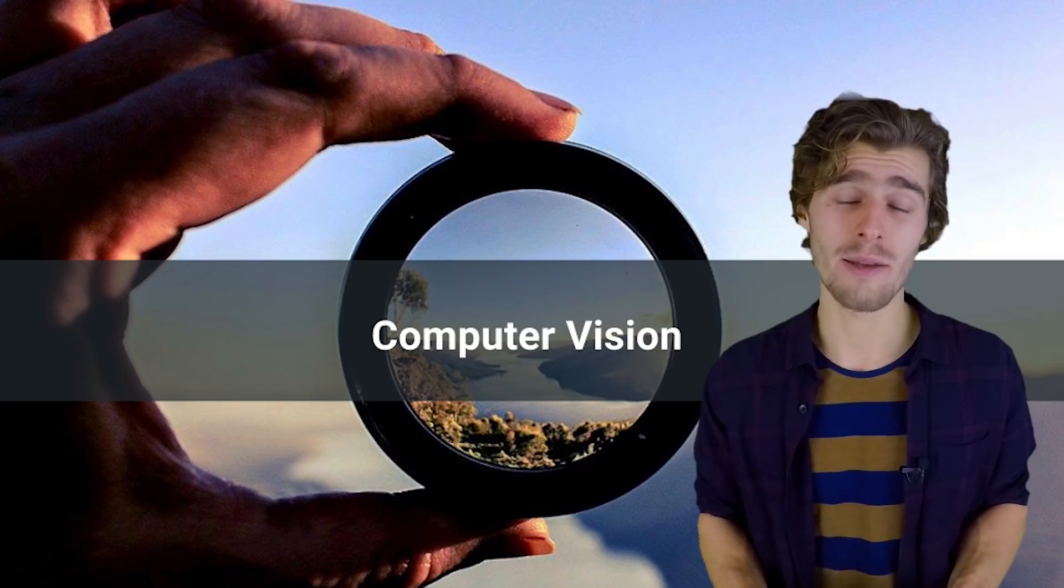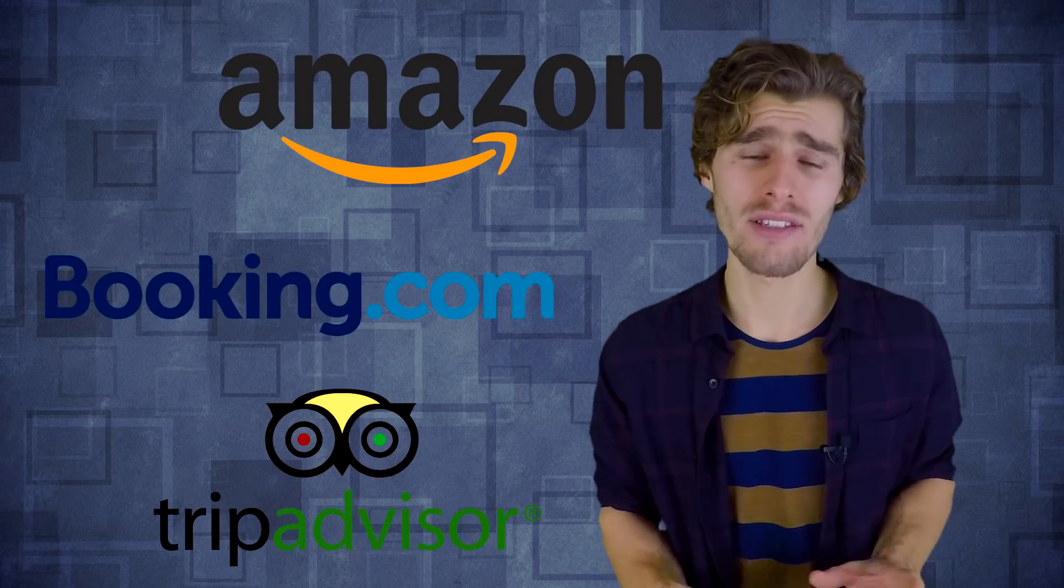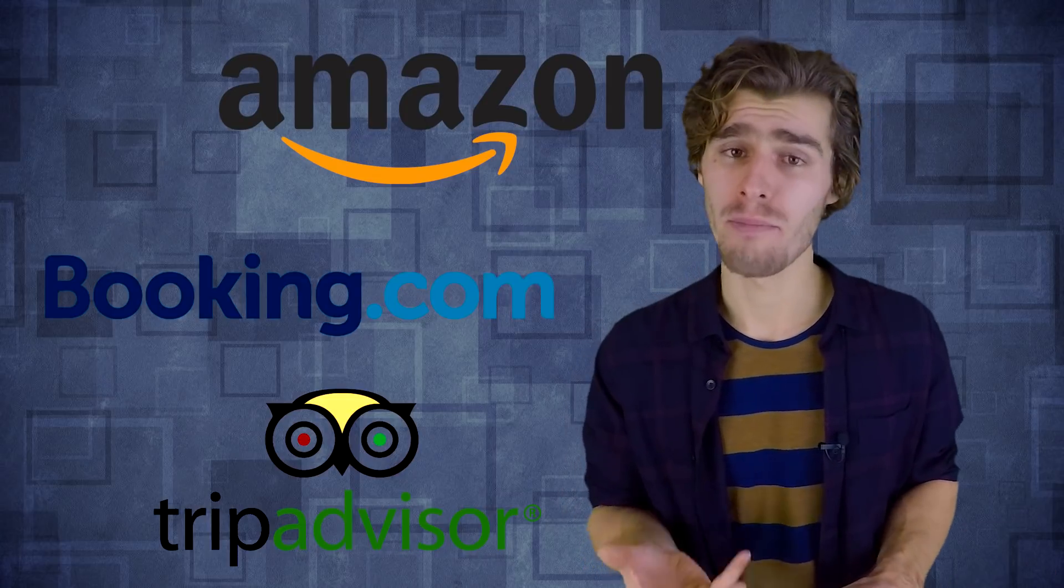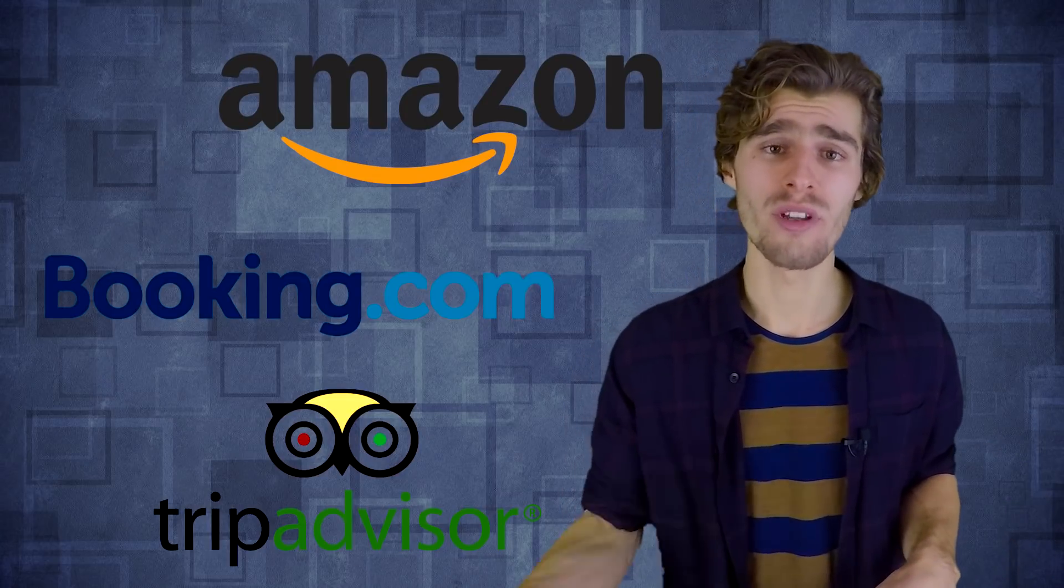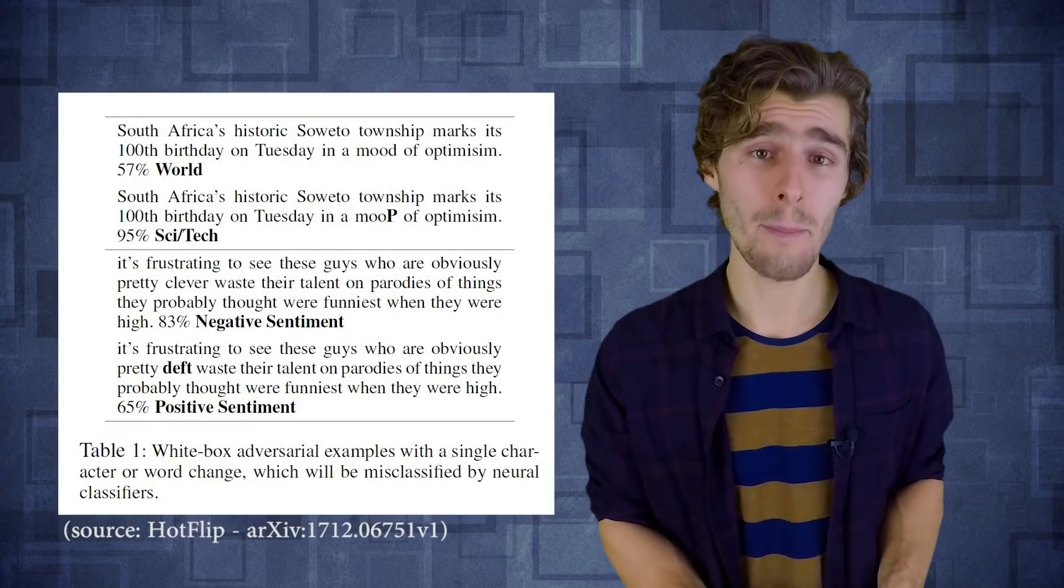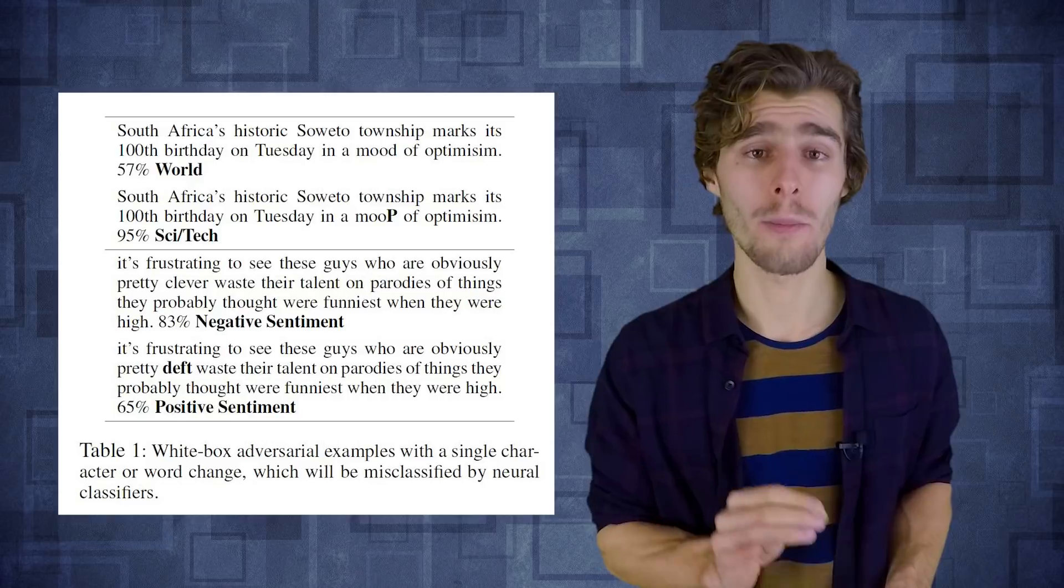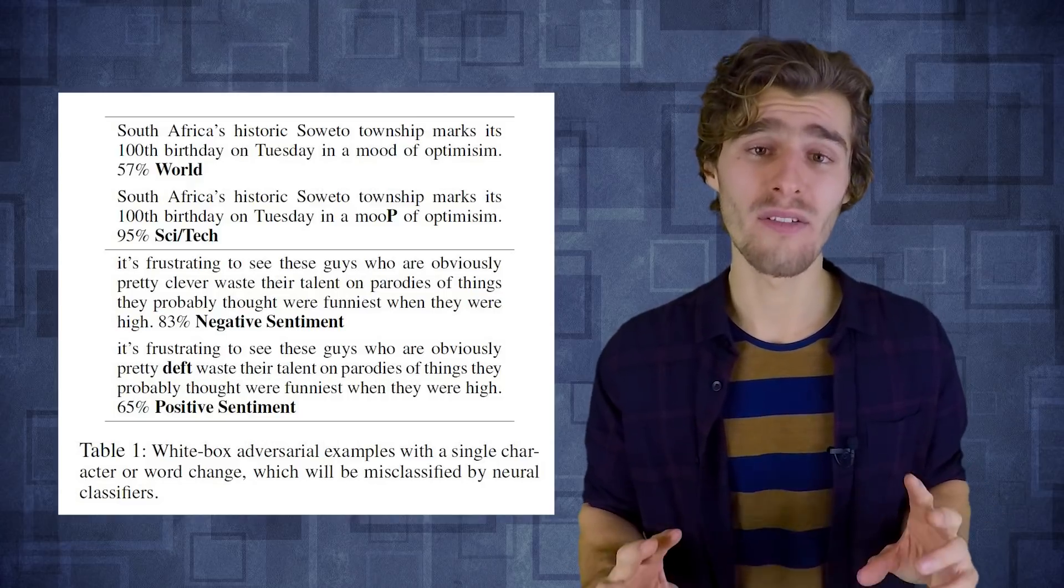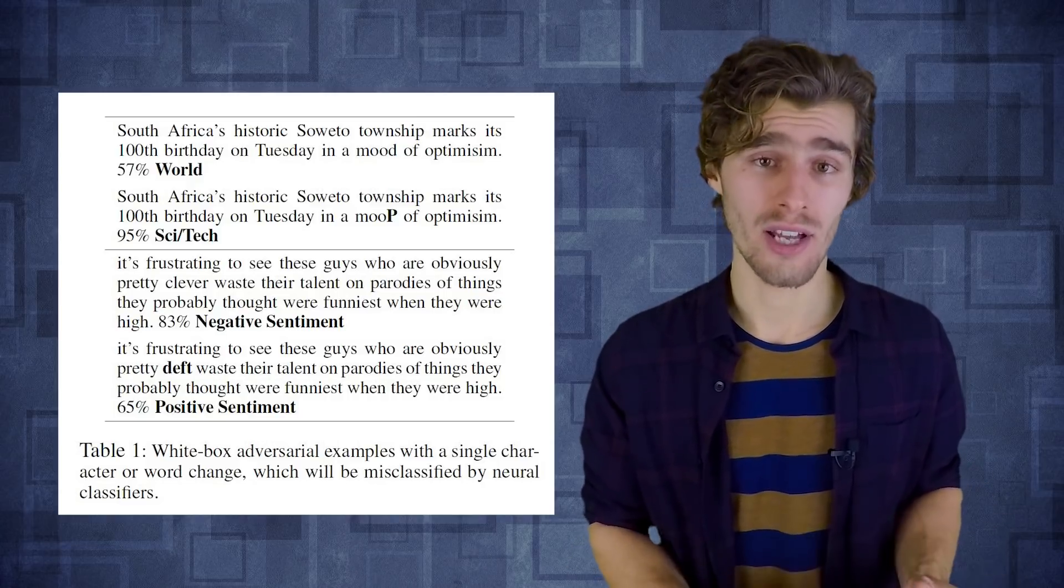And very interestingly, it turns out that these adversarial attacks are not just in computer vision. You can actually apply the same technique in something like natural language processing as well. Let's have a look. So if you think about websites like Amazon or Booking.com, TripAdvisor, things like that, a lot of their information and business value actually comes from users that post reviews on the websites. And nowadays most of that information is crunched and aggregated using things like sentiment analysis. So here you can see a bunch of very intriguing examples whereby only changing a couple of characters in a sentence, we are able to completely flip the classification of a natural language model.